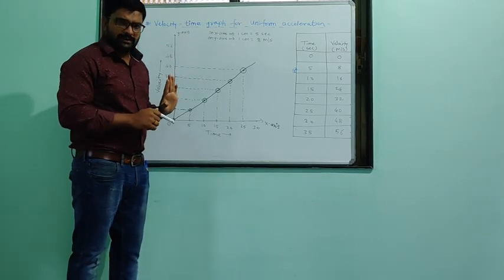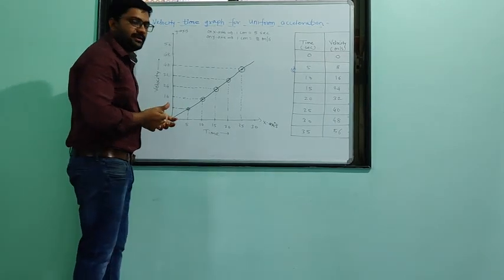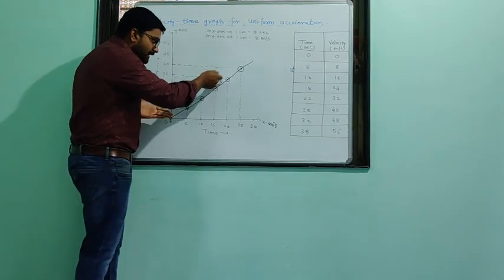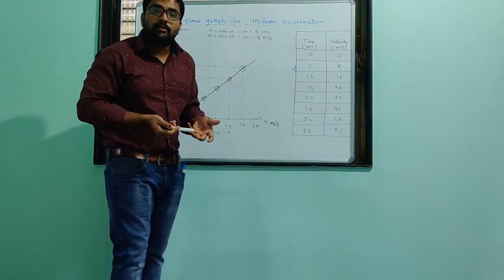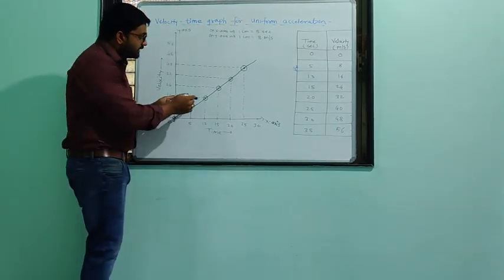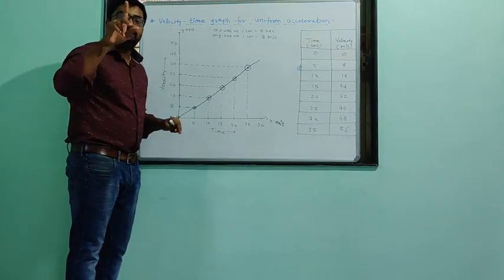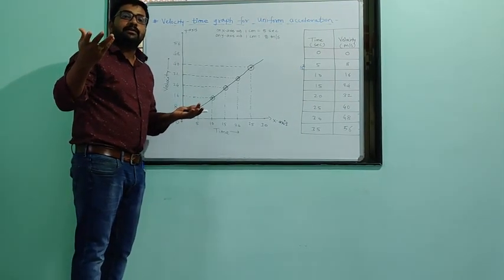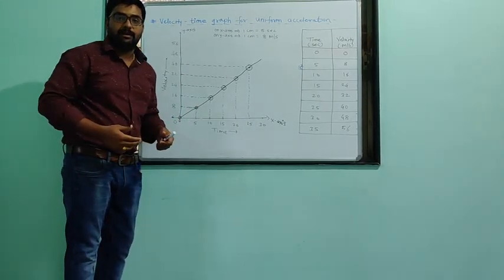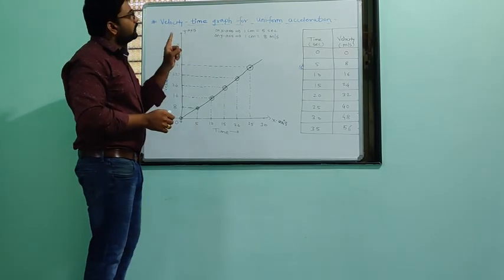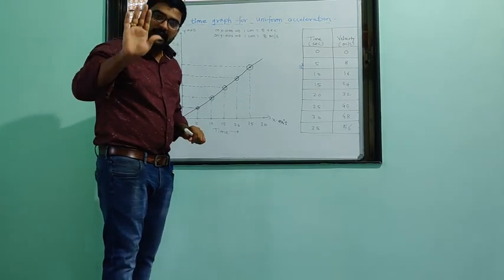You can draw any velocity-time graph for uniform or non-uniform acceleration. For uniform acceleration, the line is straight. But if you take non-uniform motion, the line will not be straight — it will be a zigzag line. Whether acceleration is positive or negative, the nature of the line is different. Always remember: for uniform acceleration, the velocity-time graph is always a straight line.